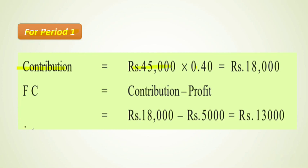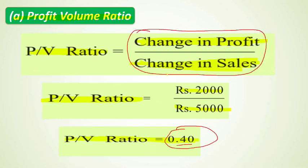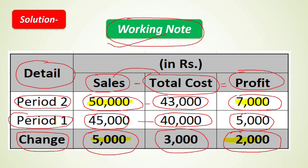For Period 1: Contribution = Sales × PV Ratio = ₹45,000 × 0.40 = ₹18,000.